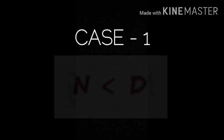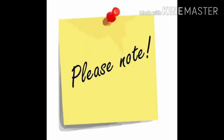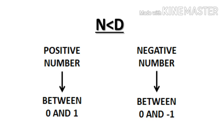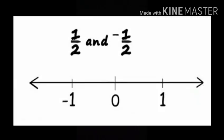So the first case is when numerator is smaller than denominator. Here is a note. If the numerator is smaller than denominator, it will always be between 0 and 1 if it is positive. Similarly, a negative number will be between 0 and minus 1. So let's try to plot 1 upon 2 and minus 1 upon 2 on a number line.